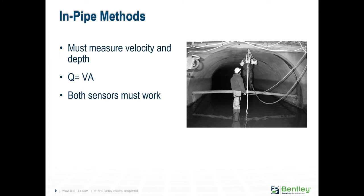Such an approach will only yield accurate results when uniform flow exists in the pipe. In Manning's equation, the depth is always an increasing function of velocity. However, backwater conditions occur frequently in sanitary sewer systems. In this situation, as the depth increases, the average velocity may actually decrease. As the system becomes surcharged, using the depth and Manning's equation to calculate velocity and flow becomes invalid. In this situation, the use of depth-only measurements yields values of velocity and flow rate that are too high.